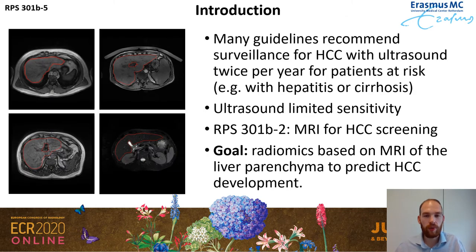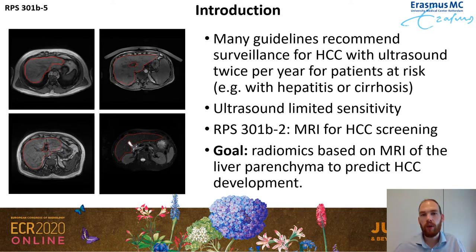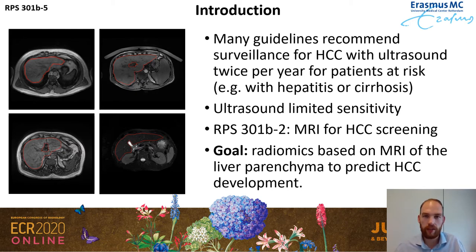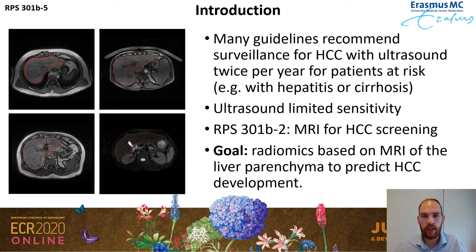In this session we're concerned with HCC, and we see that many guidelines recommend surveillance for HCC with ultrasound twice per year for patients at risk. We know that ultrasound has limited sensitivity, and as discussed in earlier talks in this session, we may also use MRI instead of ultrasound for detecting these tumors. However, besides detecting these tumors, it would be even more beneficial if at an earlier stage we could already predict whether a patient will develop HCC later on.